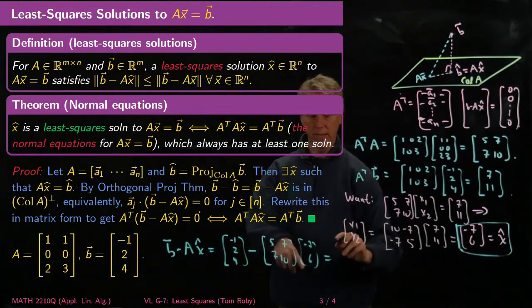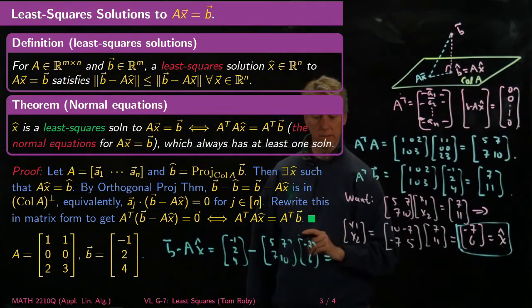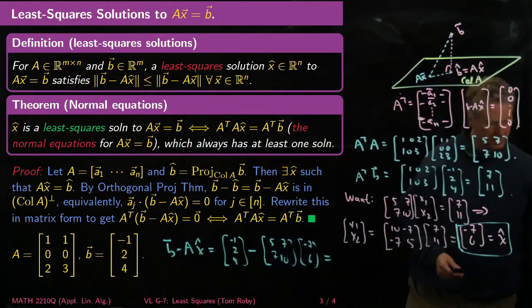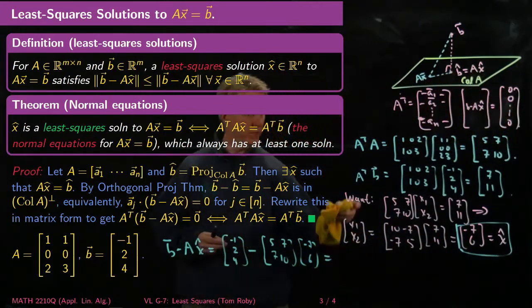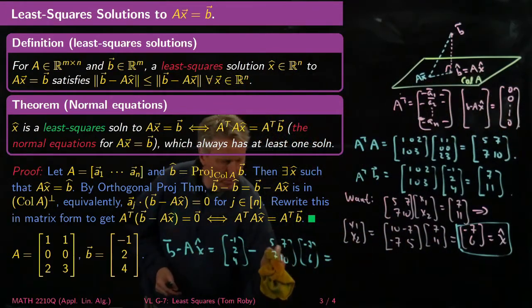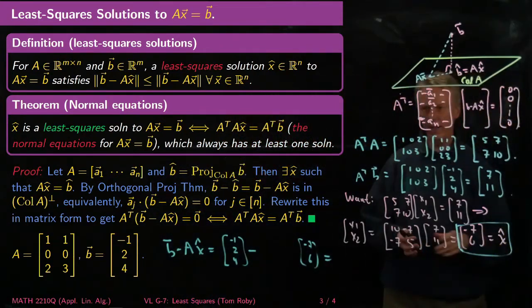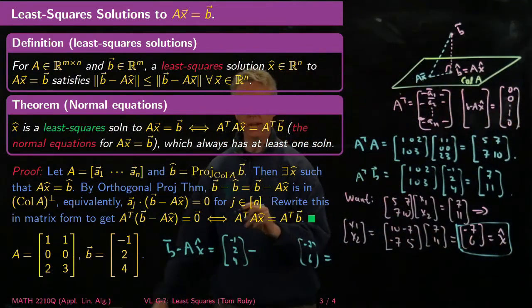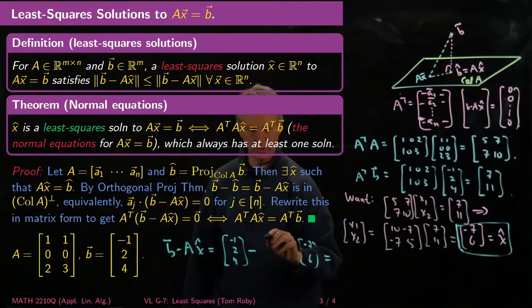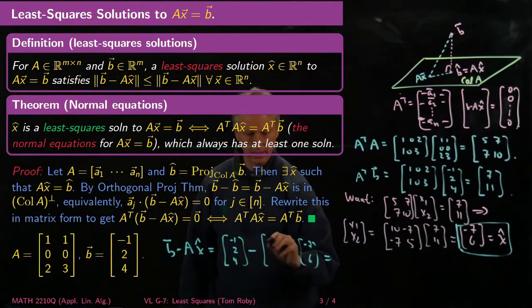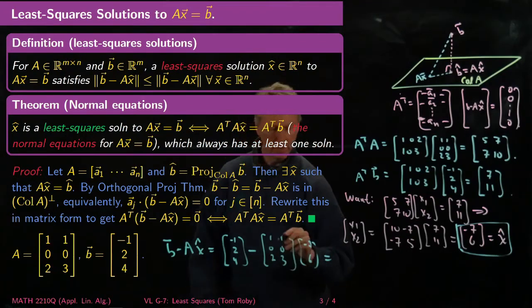And I multiply that. So I have -7 times this column, plus 6 times this column. And so that gives me [-1, 0, 4].